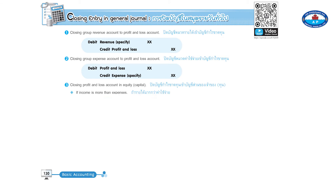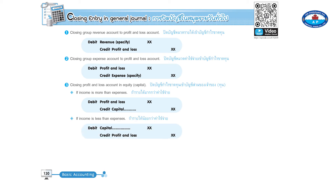Three: closing profit and loss account to equity capital. If income is more than expenses, debit profit and loss, credit capital. If income is less than expenses, debit capital, credit profit and loss. Four: closing drawing account to capital — debit capital, credit drawing account.